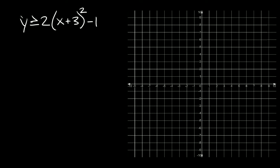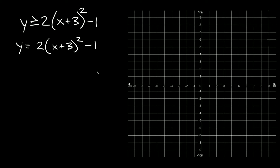Let's try one more. This one is y is greater than or equal to 2 times (x plus 3) squared minus 1. Again, the first thing we want to do is change the inequality to an equal sign, so we have y equals 2 times (x plus 3) squared minus 1. Now this is what we're going to graph. You might notice this is not in standard form — it's actually in a different type of form called vertex form.